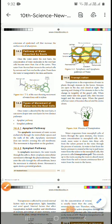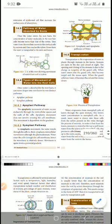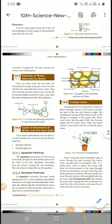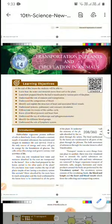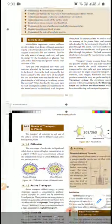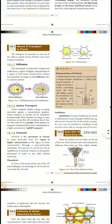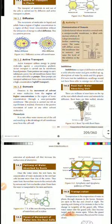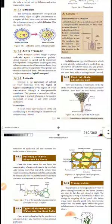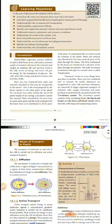Hello students, today we can see the types of movement of water into the root cells. This is the lesson number, advanced science, transportation in plants and circulation in animals, unit 14. Before that, units 12 and 13 are completed. So now we will go for the 14th lesson.